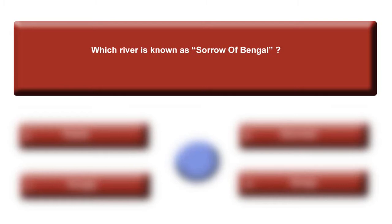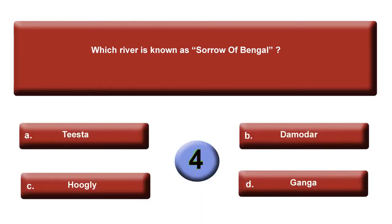Easy question: Which river is known as the Sorrow of Bengal? Your options are: option A, Tista; B, Damodar; C, Hooghly; or option D, Ganga. Quite an easy question. Time is up. Answer is B, Damodar.